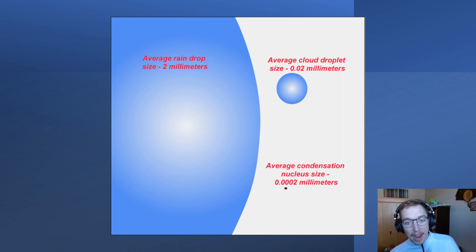If we look at the average raindrop size, roughly around 2 millimeters, to the average cloud droplet size, roughly around 0.02 millimeters, and then we consider the average condensation nucleus size, about 0.0002 millimeters, we can get an idea of just how incredibly small that feature is.